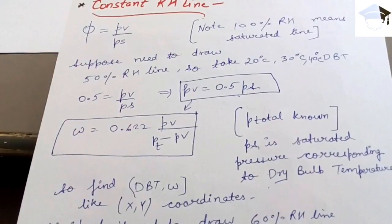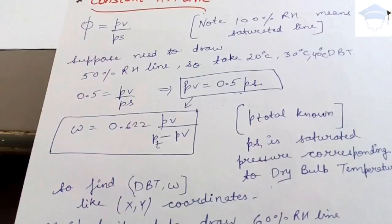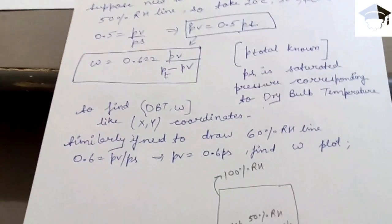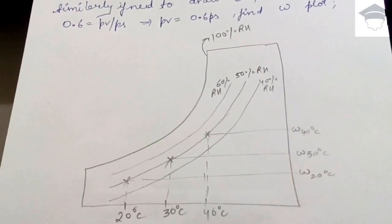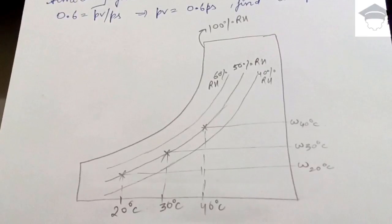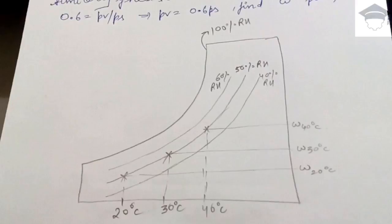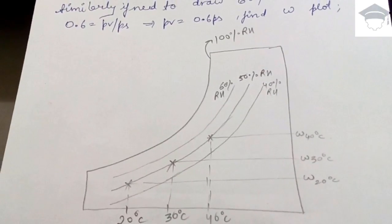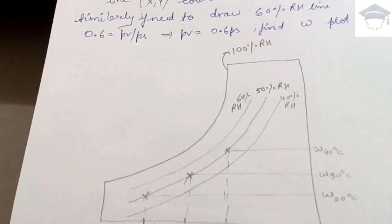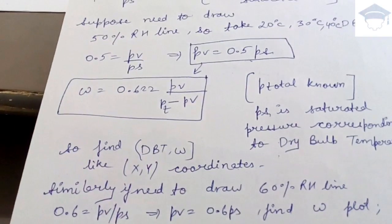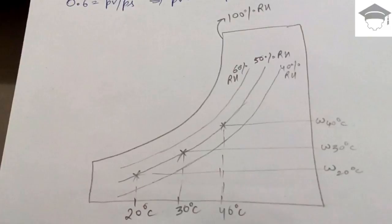Repeat for 30°C: find saturation pressure at 30°C, find omega, then move up from 30°C and left from omega at 30°C — that gives the second point. Similarly for 40°C: move up from 40°C and left from omega at 40°C for the third point. With three points, draw a smooth curve — this represents the 50% RH line.